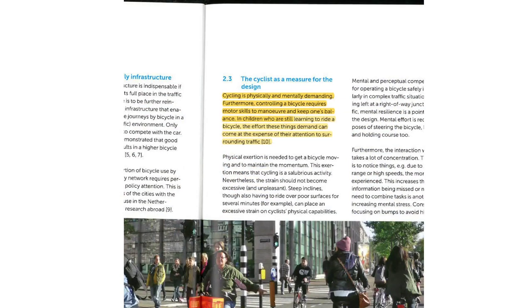I began the conversation with that topic and wanted to get your take on another quote. Section 2.3 begins by saying cycling is physically and mentally demanding. Furthermore, controlling a bicycle requires that one keeps one's balance. Children who are still learning to ride a bike — the effort these things demand can come at the expense of their attention to surrounding traffic. This speaks to the idea of designing cities for people from 8 years old to 80 years old.